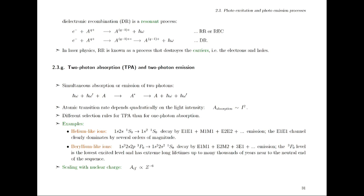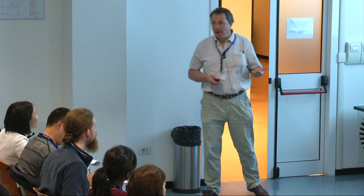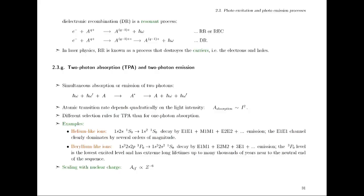Instead of one electron falling out and releasing an electron with well-defined energy, in dielectronic recombination one electron comes in with a well-defined energy — a resonant process — and allows creation of a doubly excited state of the initial ion, which subsequently may stabilize under the emission of photons. This is a very frequent process in astrophysical plasmas, where recombination occurs either via radiative or, at the right energies, via dielectronic recombination, because these highly charged ions prefer to emit photons.